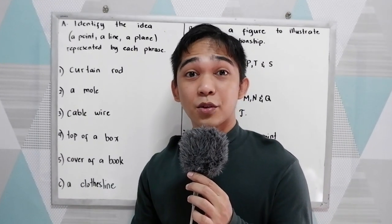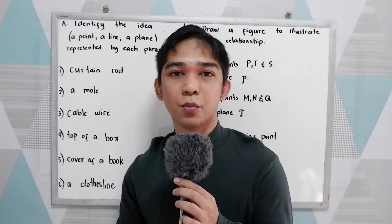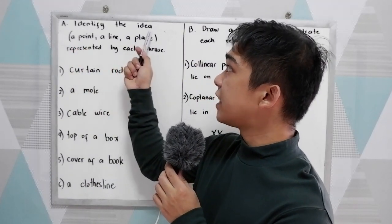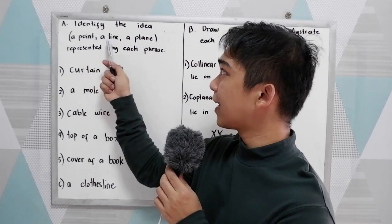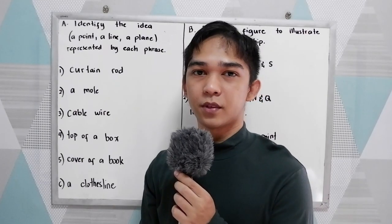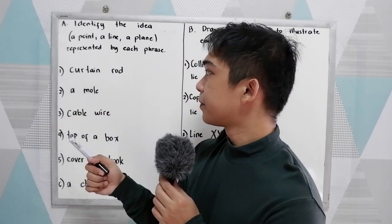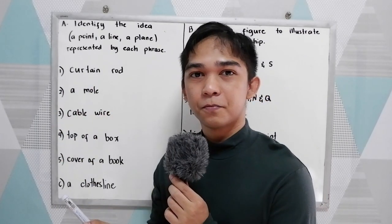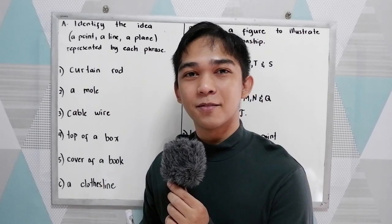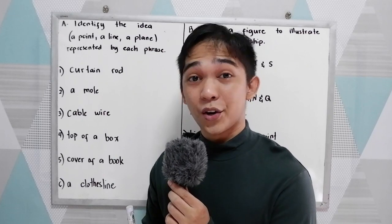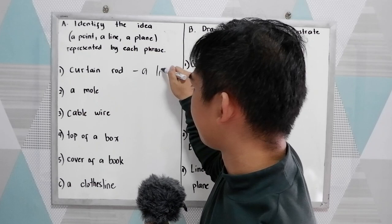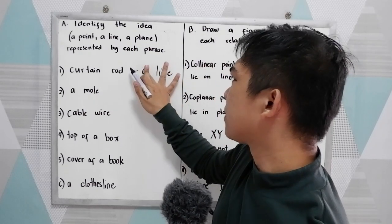Now let us try to solve some problems in the undefined terms in geometry. Letter A, identify the idea. We have a point, a line, and a plane represented by each phrase. Number one, curtain rod. What is your answer? Point, line, or plane? Curtain rod is a line, or simply line.